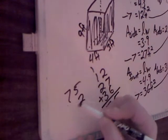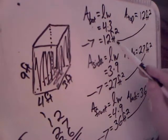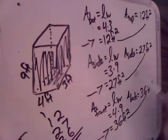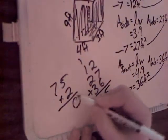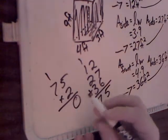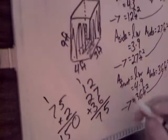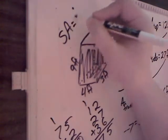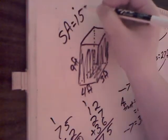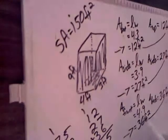So 75 times 2 — because we're doubling three pairs of identical faces. 2 times 5 is 10, 2 times 7 plus 1. The surface area of this shape is 150 feet squared.